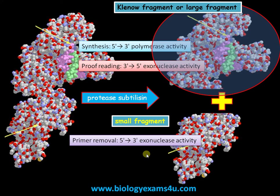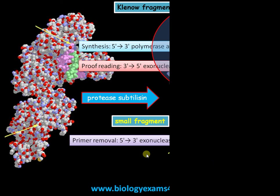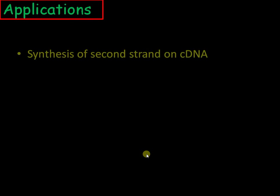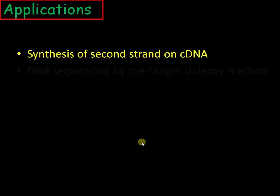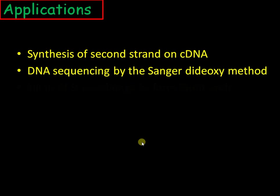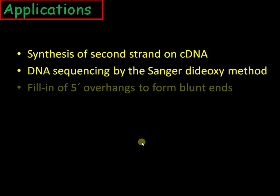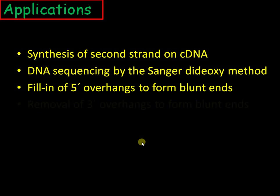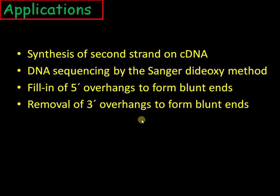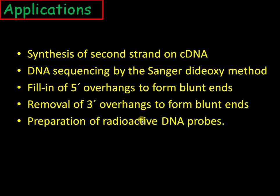The Klenow fragment is widely used in genetic engineering for many purposes: synthesis of the second strand of cDNA, DNA sequencing technologies, fill-in of 5' overhangs to form blunt ends, removal of 3' overhangs to form blunt ends, and preparation of radioactive DNA probes. It is a widely used DNA modifier.